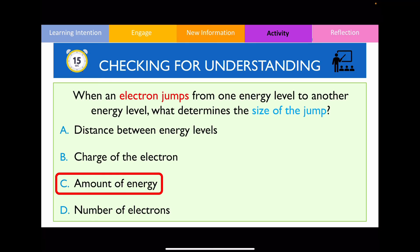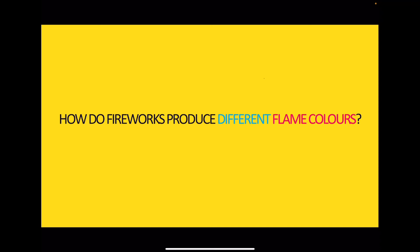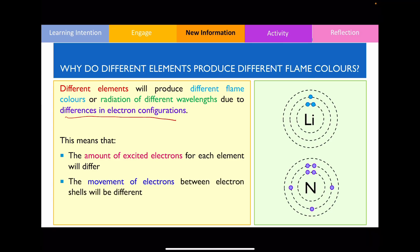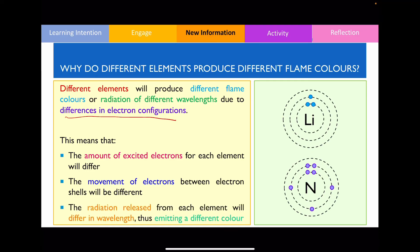The last thing we'll be looking at is why different chemicals in a firework produce different flame colours. The reason is mainly due to differences in the electron configurations. Remember, electron configurations tell you the arrangements of electrons in a given element. By having different electron configurations, the number of excited electrons for each element will differ since each element has different amounts of electrons. As a result, the movement of electrons between electron shells will also vary between elements. So electrons in one element may jump from shell 1 to shell 2, whereas in another element it might jump from shell 1 to shell 3 instead, ultimately producing a different flame colour observed.